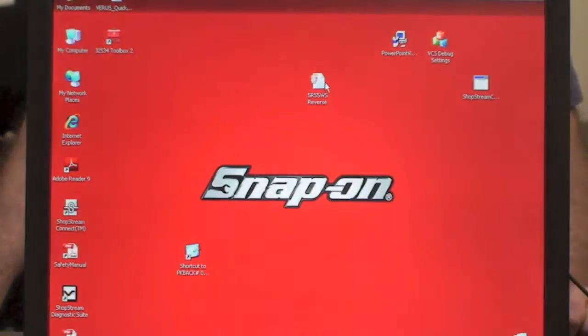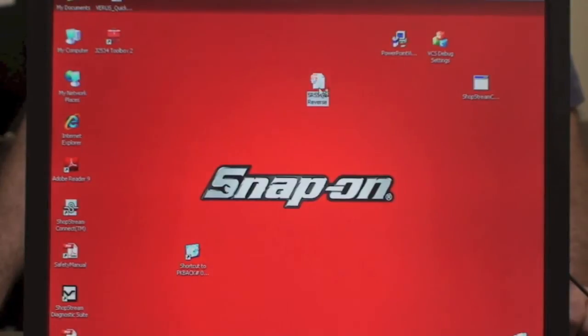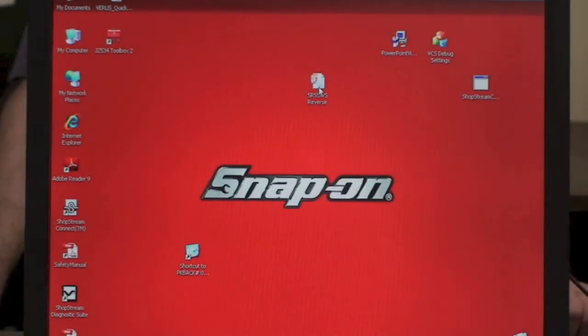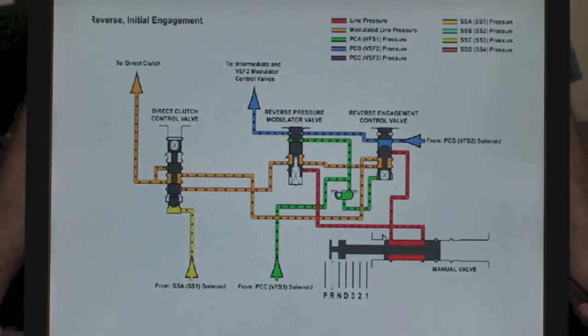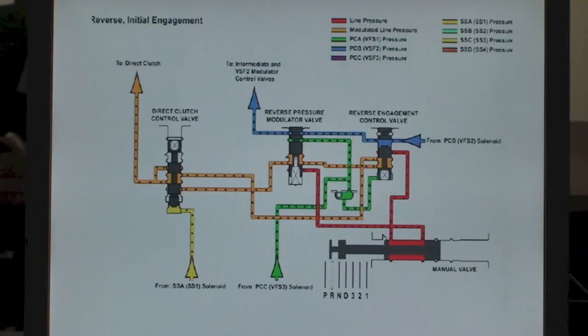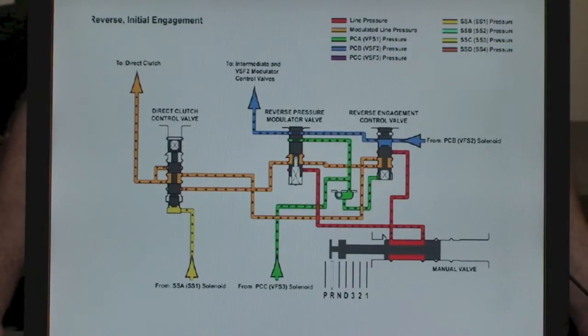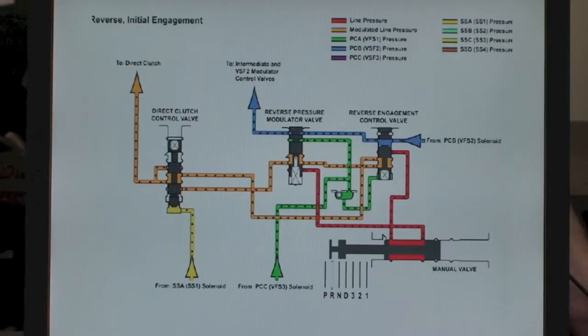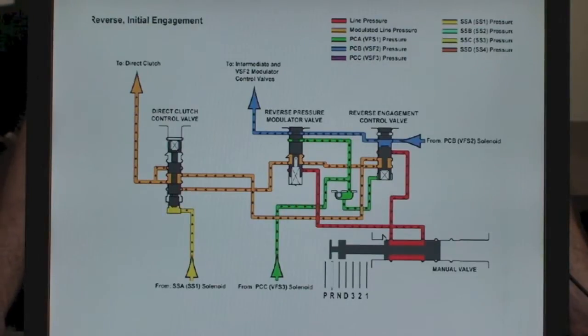Now here at Valve Body Pro, what we did is we made our own hydraulics because if you look at the hydraulics provided by the manufacturers, they only give you the static application area when it's applied or not applied. We divided it in two stages: the initial engagement and then the engagement. Let's look at the first servo and the torque stage of the reverse engagement.